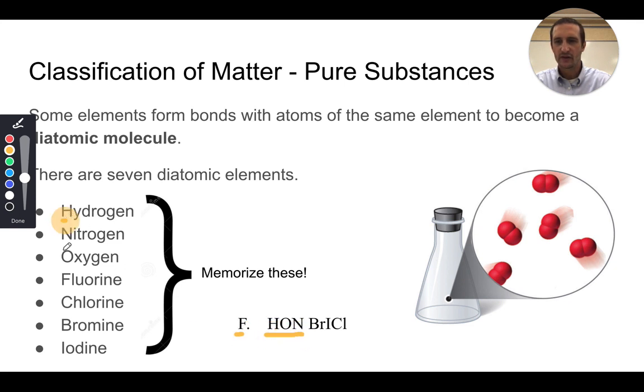F for fluorine, Hahn H-O-N, that's hydrogen, oxygen, nitrogen. And then Brickell, B-R for bromine, I for iodine, C-L for chlorine. So remember the name F. Hahn Brickell, and you'll remember the seven diatomics.